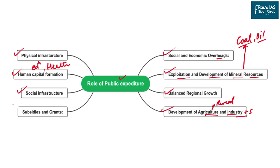Lastly, public expenditure is important for providing subsidies and grants. These subsidies and grants help sectors like agriculture, industries, services, and especially micro, small, and medium enterprises to grow and sustain in hard economic situations.